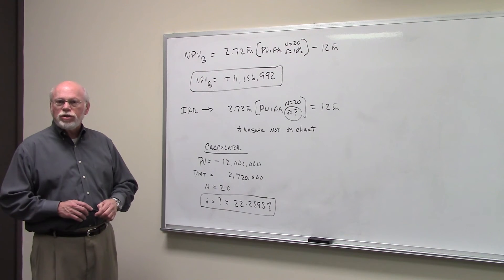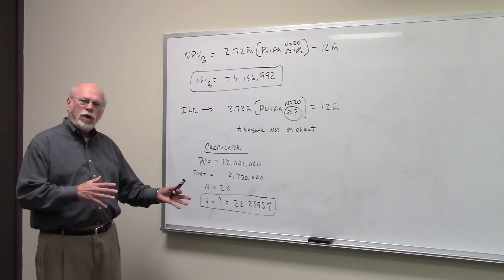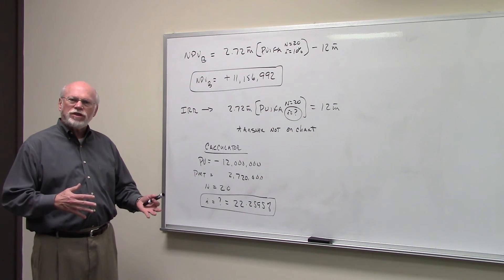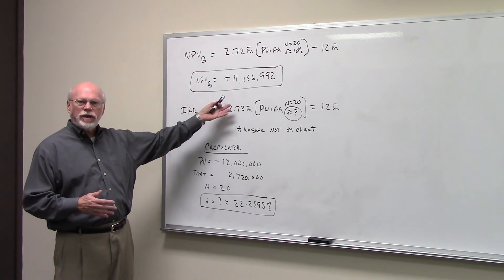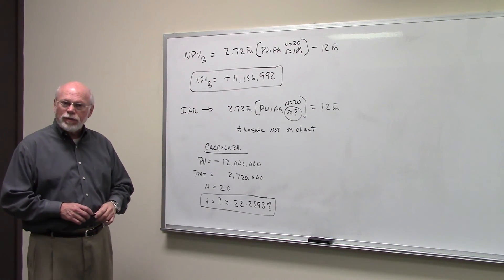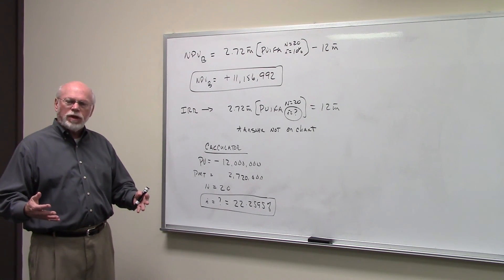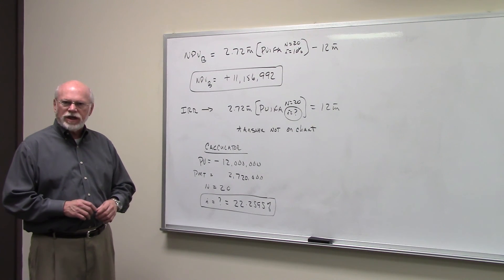Which project do you want to choose? Well, the first project, Project A, is the one you want to choose. Its net present value is something like $14 million. This one's more like $11 million. So you choose the project that will add the most to the value of the firm. In this case, you choose Project A.